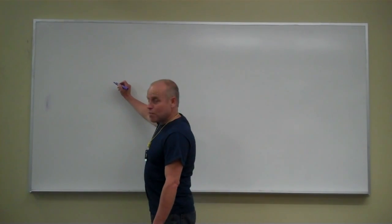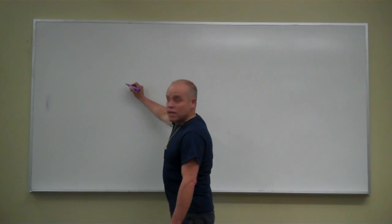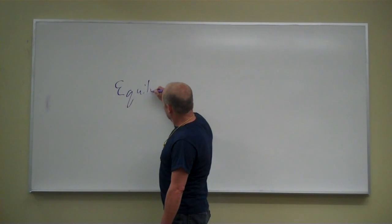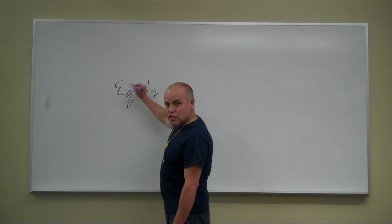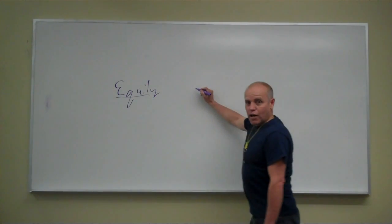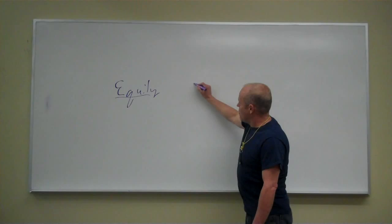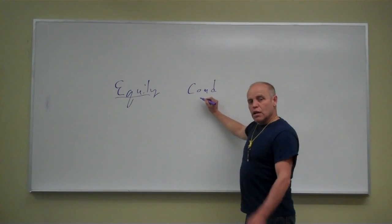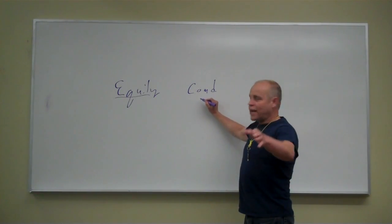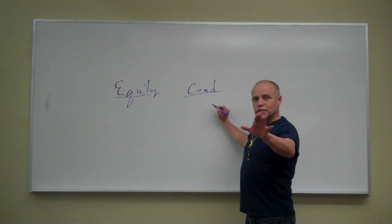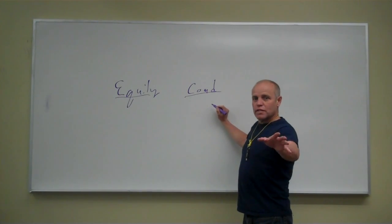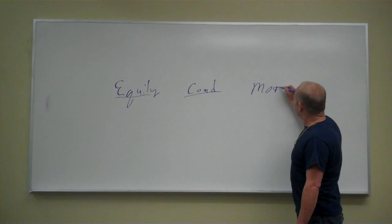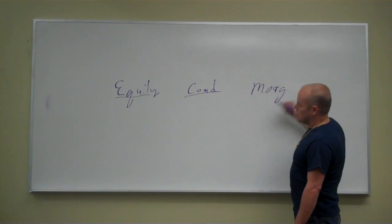Three markets. The first market we have is the equity market, which is the stock market. The second market we have is the commodity market, which includes futures on corn, grain, sugar, pork bellies, all that. The third market we have created is the mortgage market.